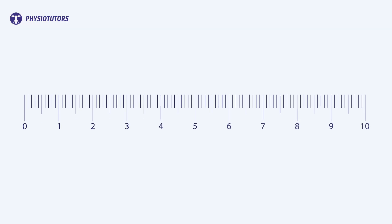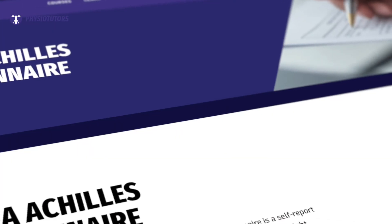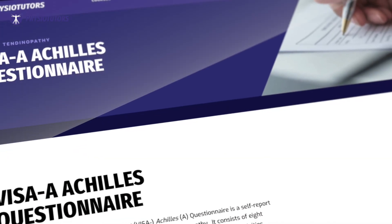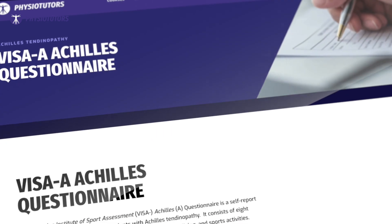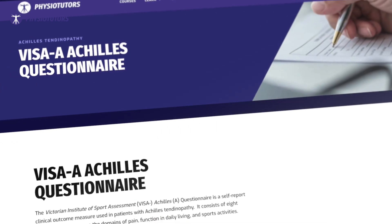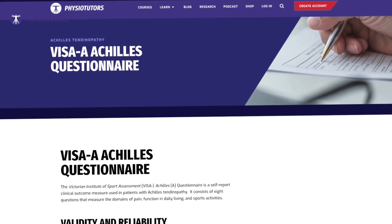In general, pain levels are assessed on a numeric pain rating scale. Activities with pain rated up to 5 out of 10 are deemed acceptable. Pain and disability due to Achilles tendinopathy is best assessed using the validated VISA-A score that you can find on our website.